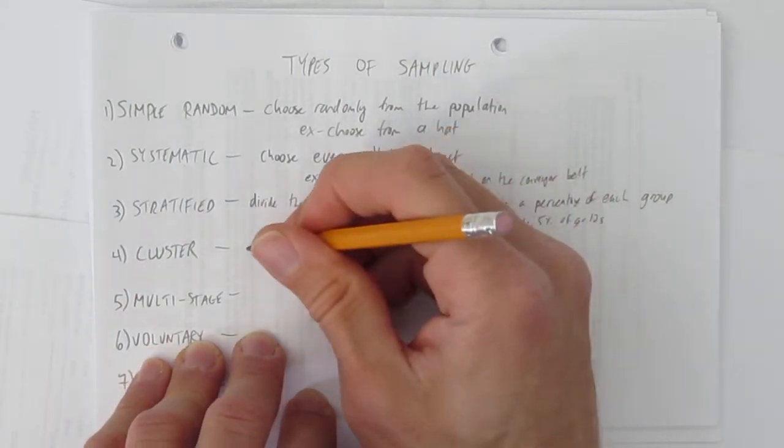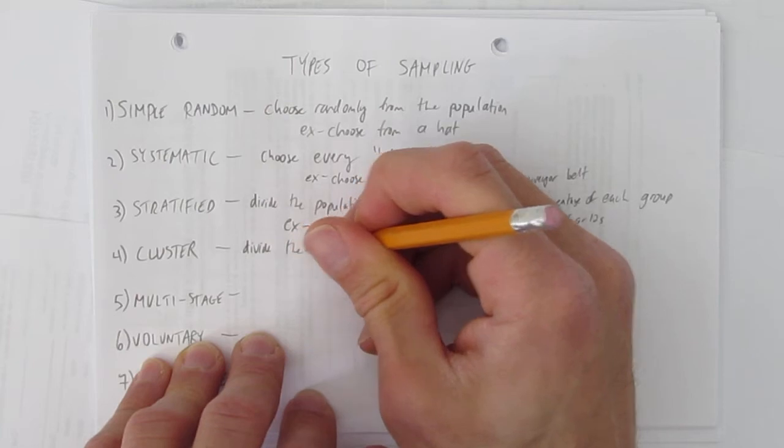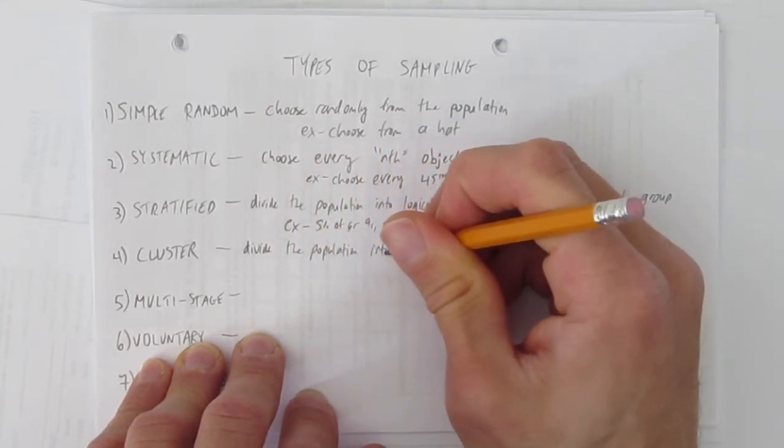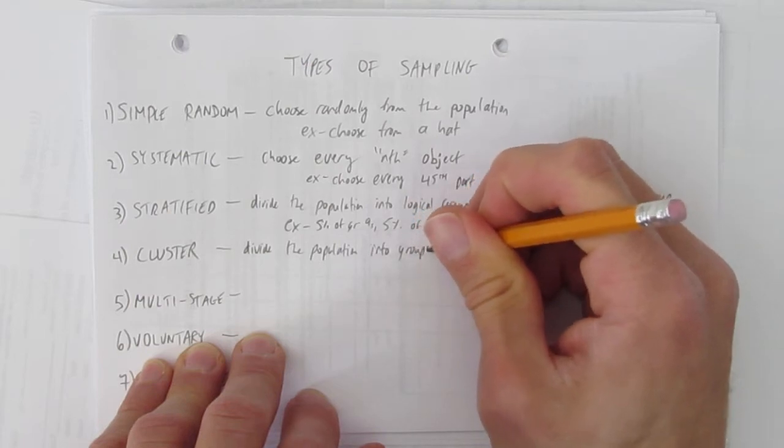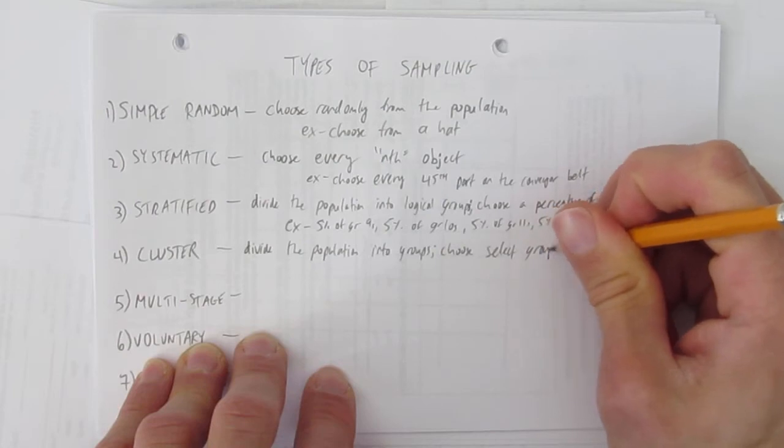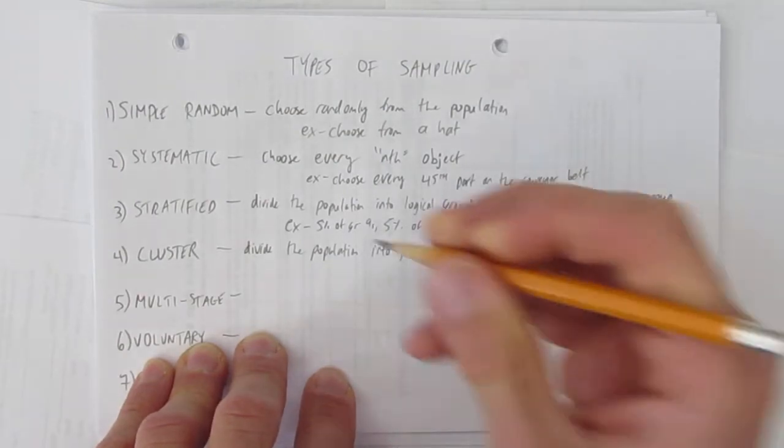Cluster sample is divide the population into groups, but then choose select groups. This one is really risky because it can really easily be biased.